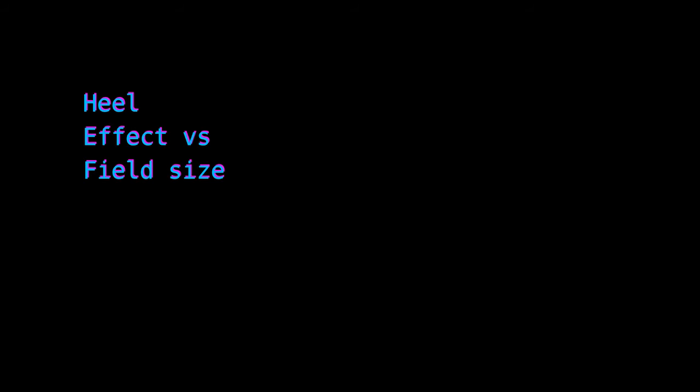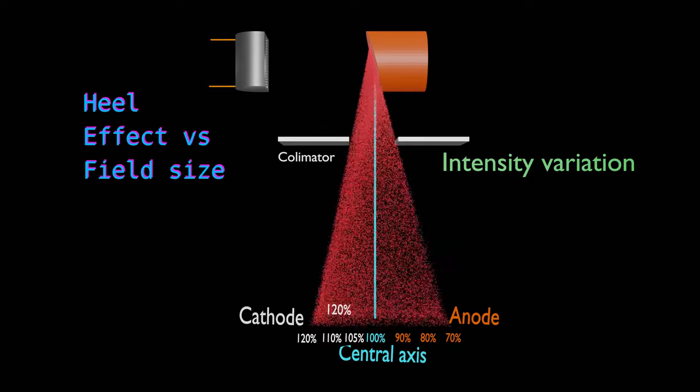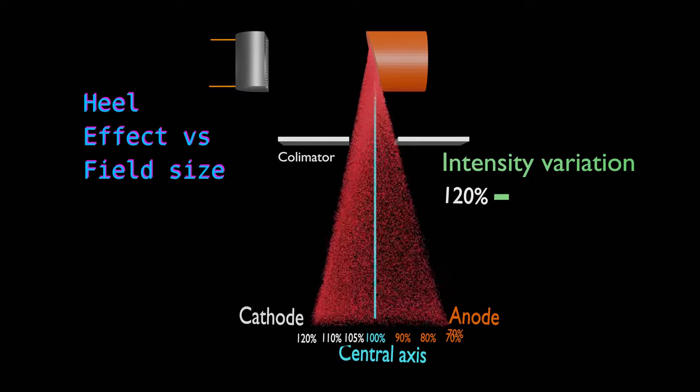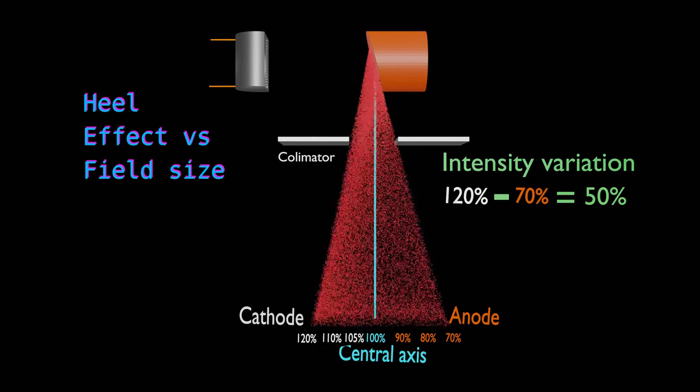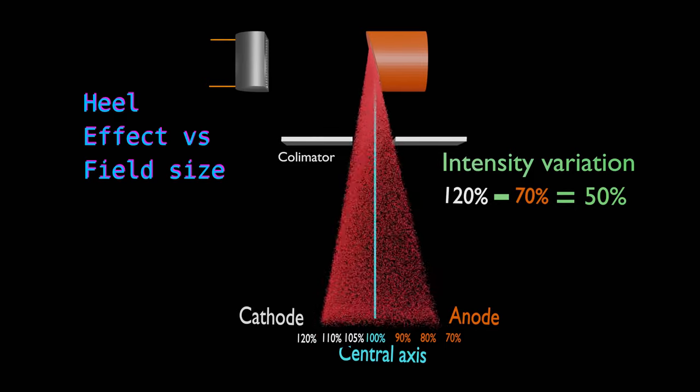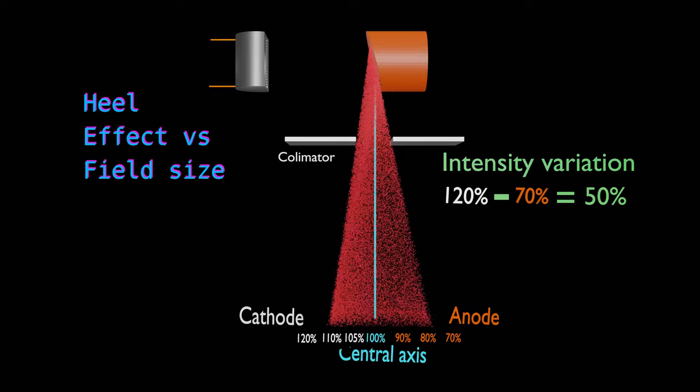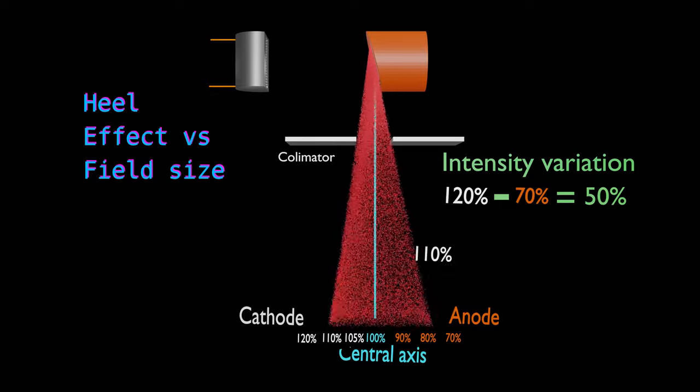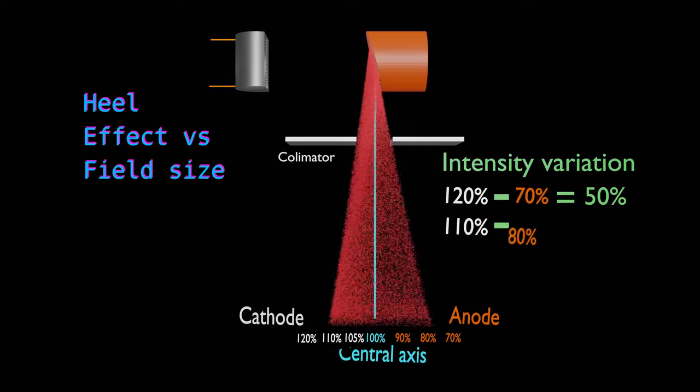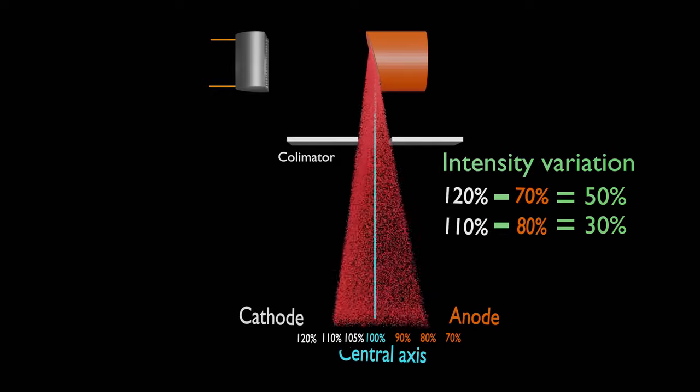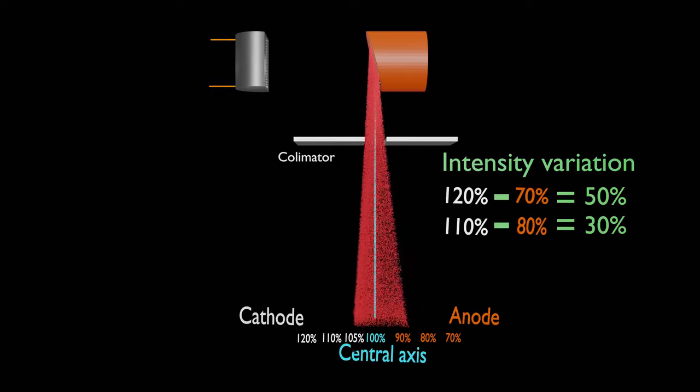Heel effect with field size changes. For this collimator setting, the intensity variation is 50%. Now, we will reduce the collimator opening along anode-cathode direction. The intensity variation will be 30%. If we further reduce the collimator opening, the intensity variation will further reduce to 15%.